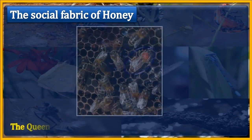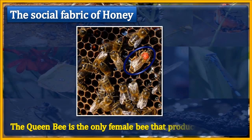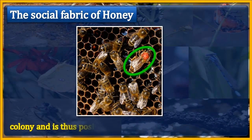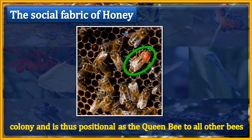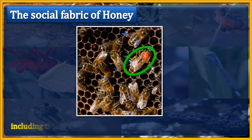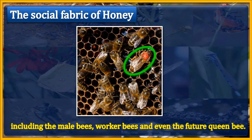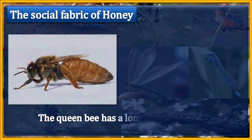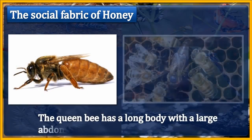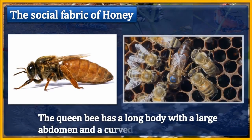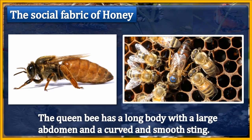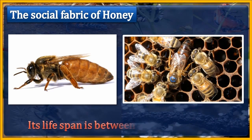The queen bee is the only female bee that produces eggs in the colony, and is thus positioned as the queen to all other bees, including the male bees, worker bees, and even the future queen bee. The queen bee has a long body with a large abdomen and a curved, smooth sting. Its lifespan is between one to three years.